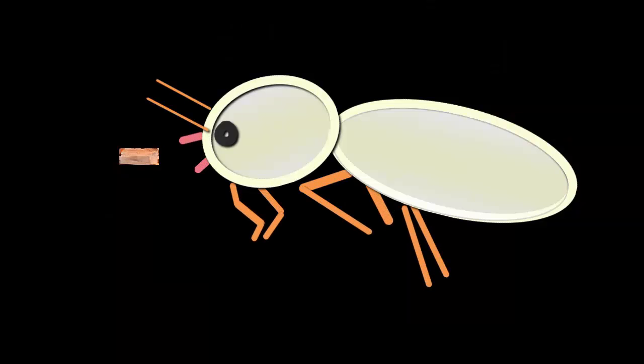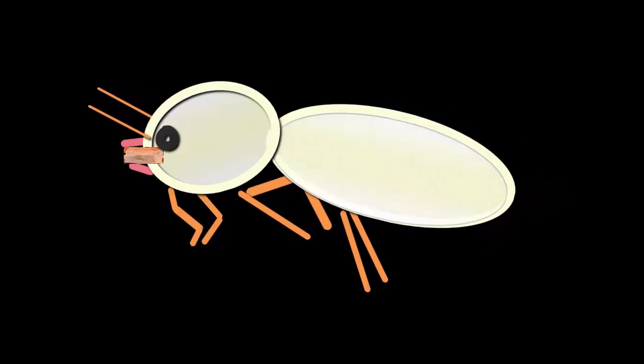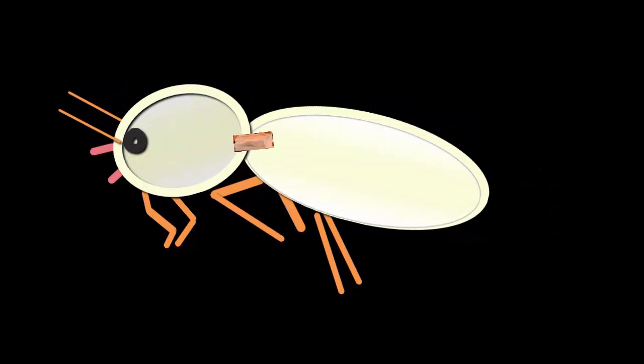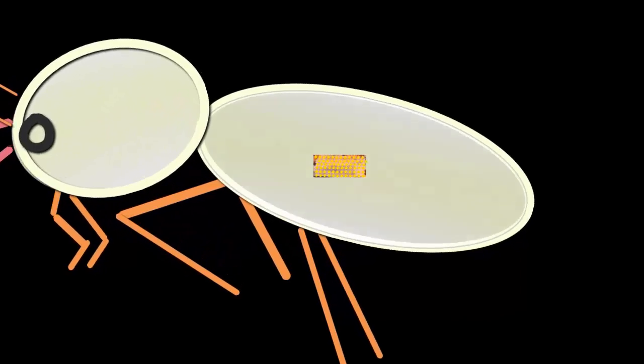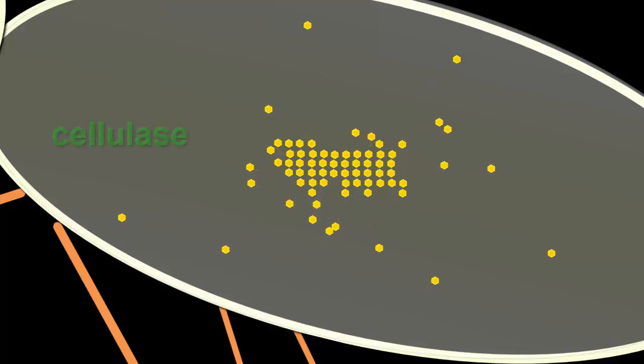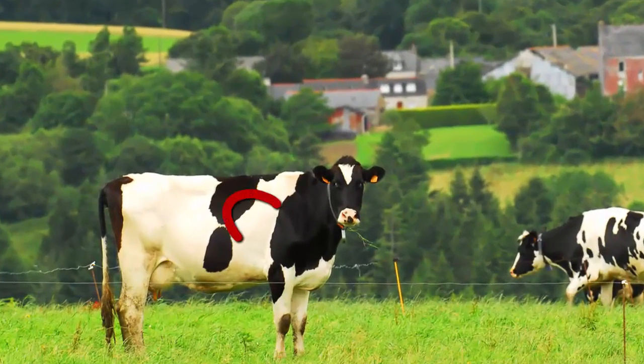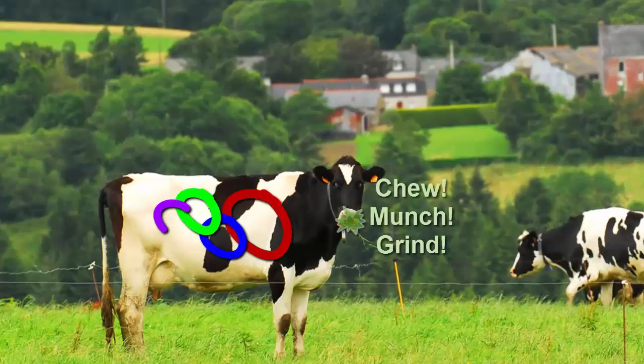But termites can eat wood for food, because they've got the right enzymes in their gut to break down the cellulose. The enzyme that they use is called cellulase. Enzymes are usually called the name of the molecule whose reaction they help, with an -ase at the end. And cows can digest the cellulose in grass, but they need four stomachs to do it, because cellulose is such a tough molecule.